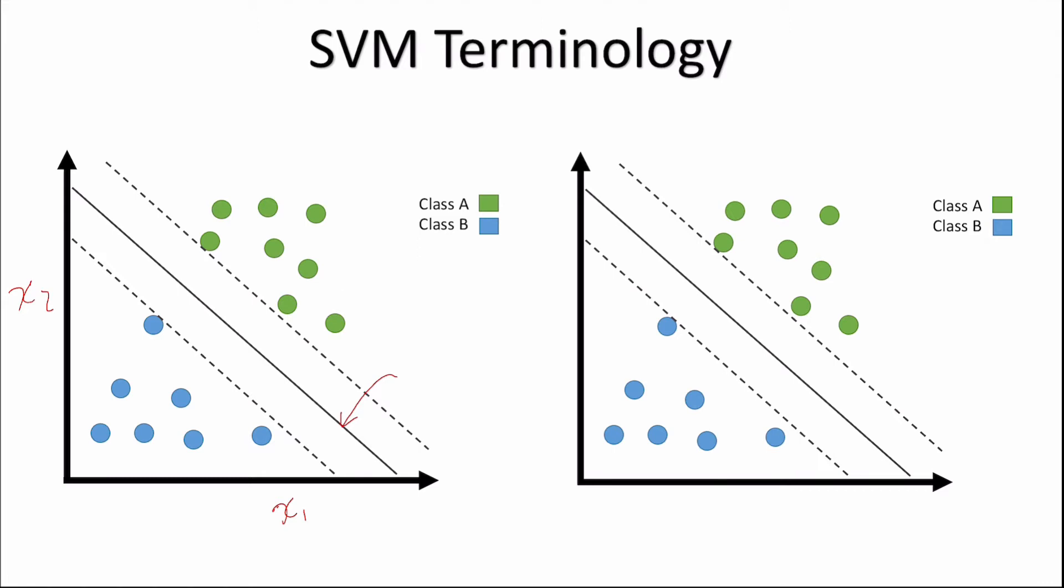So in three-dimensional space, so let's say for example we also had another axis here and another feature, let's say x3, our hyperplane will then become a plane, so it will become two-dimensional. So in general, a hyperplane is n-1 dimensions, where n is our number of features.